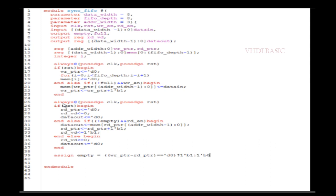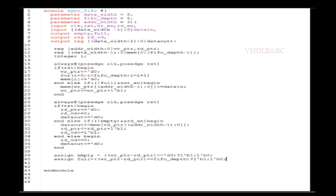Line number 39 shows how to check whether the FIFO is empty: if read_pointer minus write_pointer equals zero, the FIFO is empty and we set the empty flag; otherwise we de-assert the empty flag. For the full condition, we check if read_pointer minus write_pointer equals the FIFO depth. If that condition is satisfied, the FIFO is full and we assert the full flag; otherwise we de-assert the full flag.